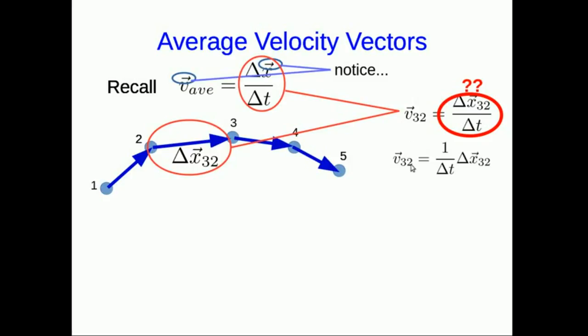But actually you do because you could rewrite it this way and now this 1 over delta t is a scalar and we're multiplying a vector by a scalar. And we know how to do that. It's just going to rescale the vector. So we're going to get a new vector that's in the same direction as delta x32 but a different length.